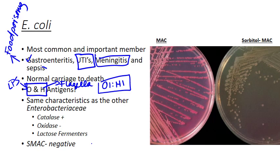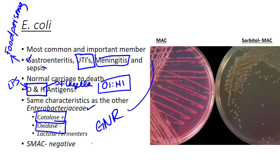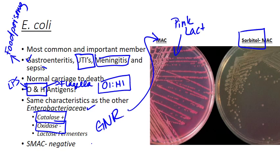E. coli is a member of the Enterobacteriaceae family, which means it's catalase positive and oxidase negative. It's a gram-negative rod, so you can grow it on MacConkey agar. This is one of the Enterobacteriaceae that is lactose-fermentative, so you can see nice pink to red colonies, which indicate that it is lactose-fermentation positive.